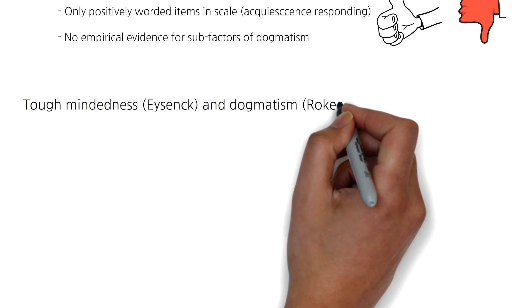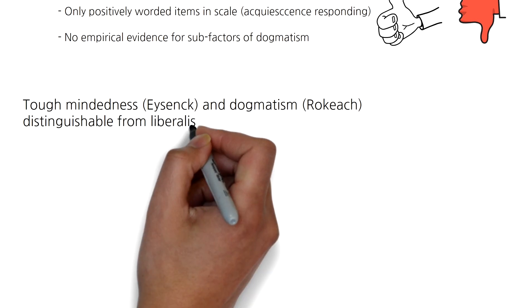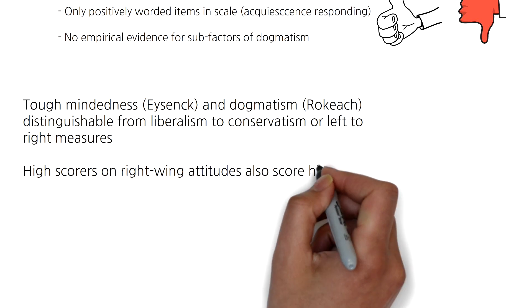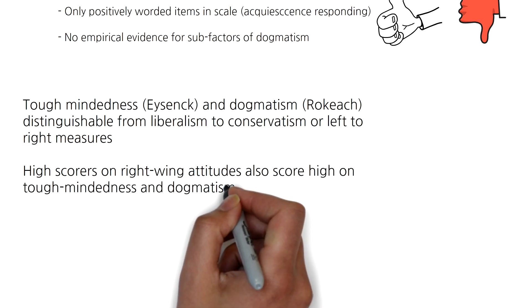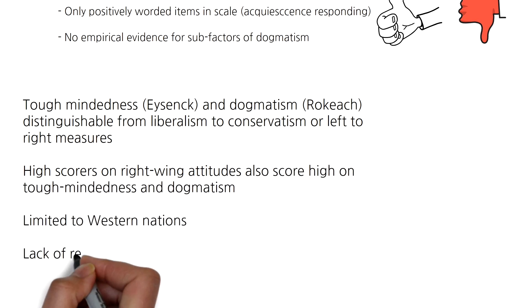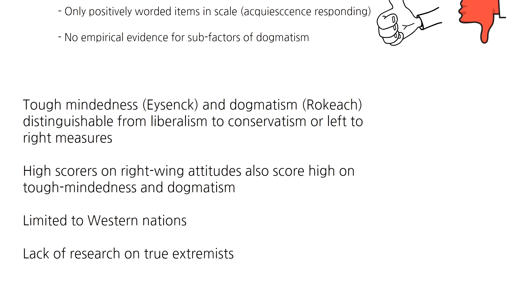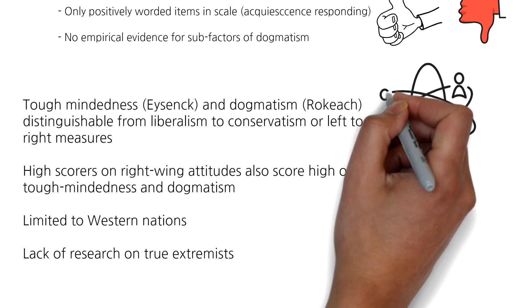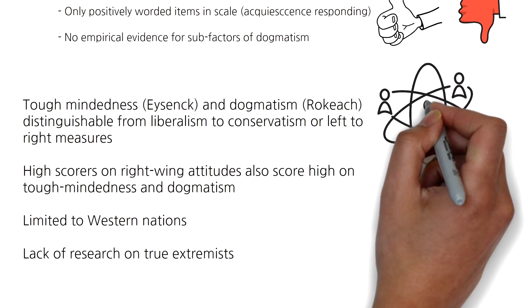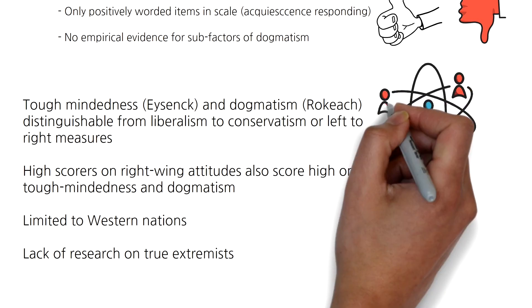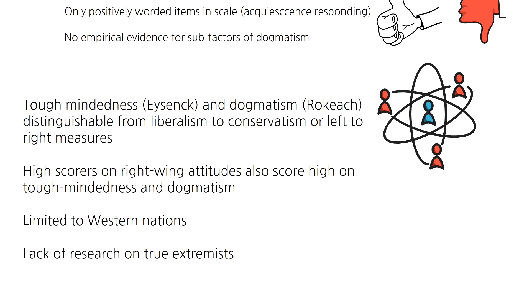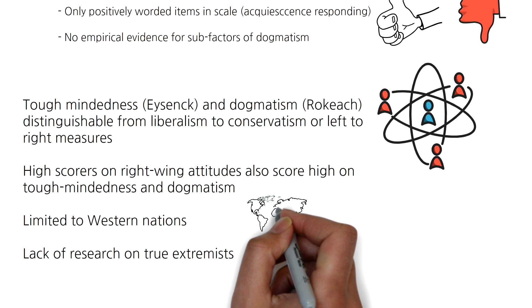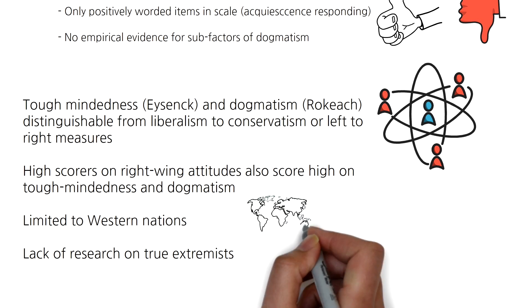To conclude on the different dimensions: tough-mindedness from Eysenck and dogmatism from Rokeach may be distinguishable from liberalism-conservatism or left-to-right measures. Nevertheless, people scoring higher versus lower on measures of right-wing attitudes also show higher levels of tough-mindedness and dogmatism. These conclusions are limited to Western nations, and there is a lack of studies investigating true extremists, as it can be hard to find and attain participants who are extreme communists.